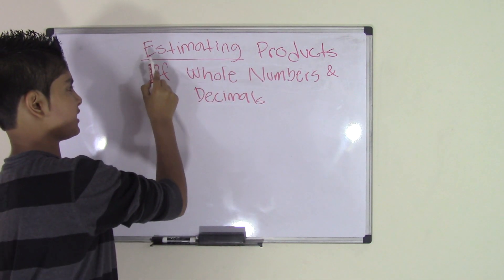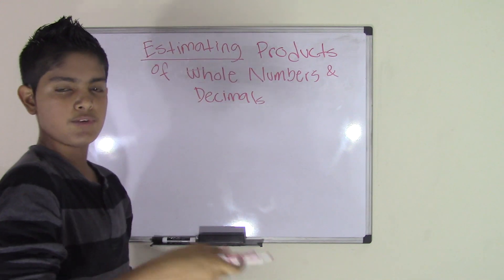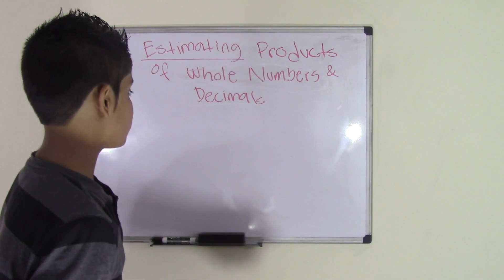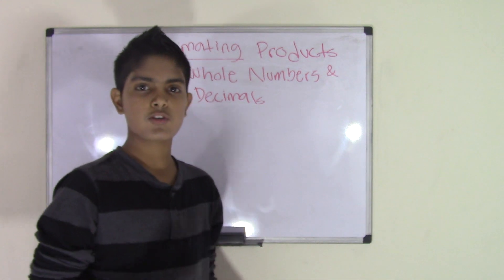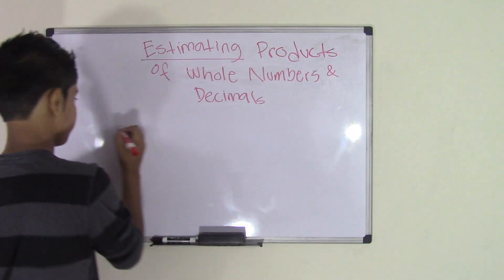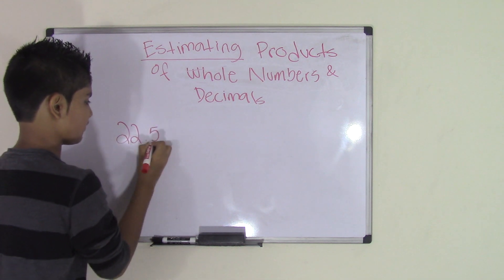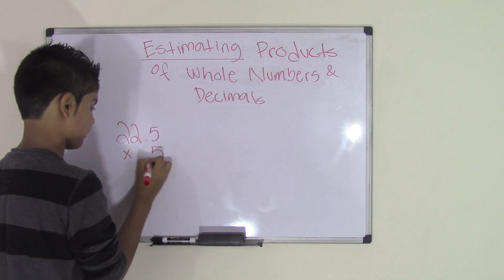You see here I've underlined the word estimating because that's what we're going to be focusing on in this chapter, I mean the topic. And so let's write an example. So for example we have 22.5 times 5. That's our problem, right?